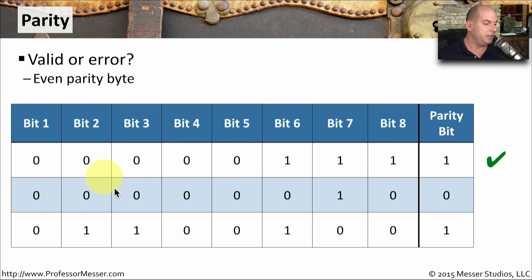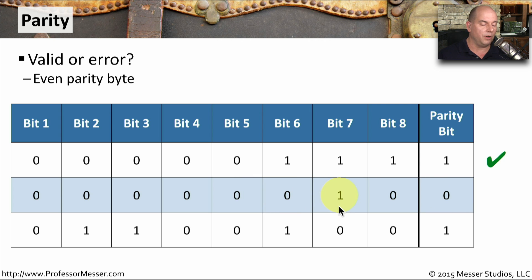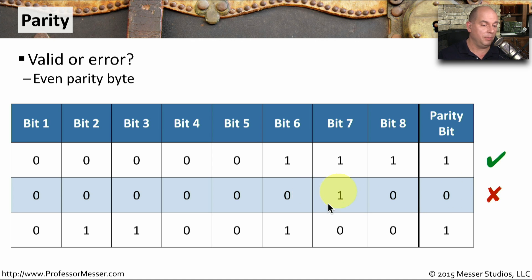For the next example — 0, 0, 0, 0, 0, 1, 0 — with a parity bit of 0. Evaluating that, we can see we have an odd number of 1s. Because our parity bit was 0 and we have an odd number of 1s, we know that something went wrong with that section of memory.